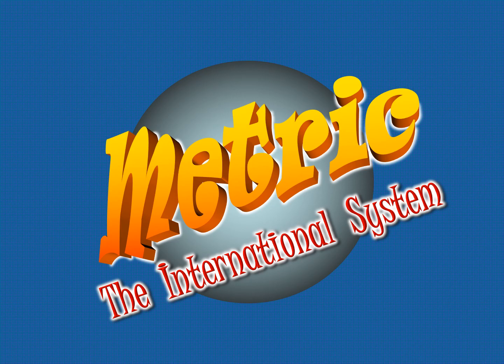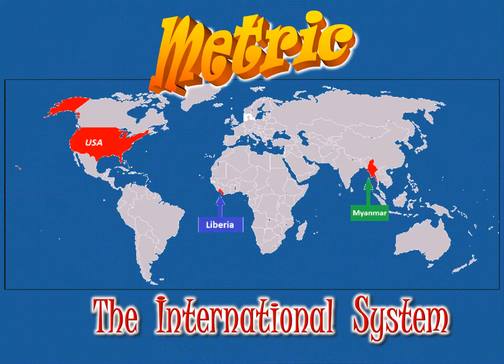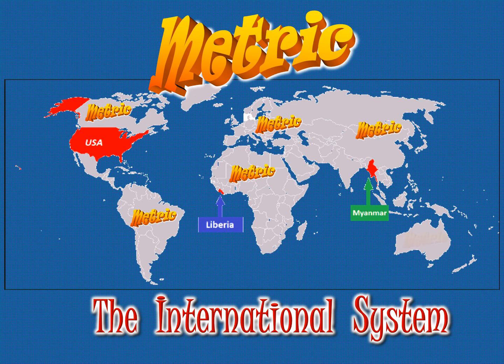The metric system is known as the international system, also as SI, and it is used in science. It's called the international system because it is used in many, many parts of the world. There are only a very few places that do not use the metric system in their daily lives, and one of them — the biggest one — is the USA.